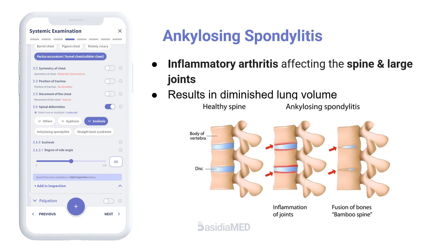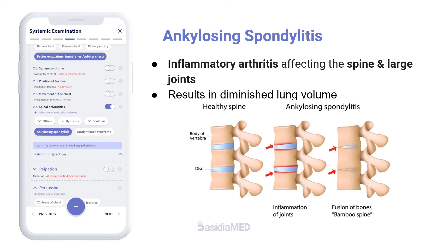Ankylosing spondylitis is an inflammatory arthritis affecting the spine and large joints. There is a diminished volume of the lung and the capacity of the chest, and thereby the capacity of the lung to expand is restricted.